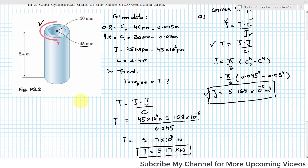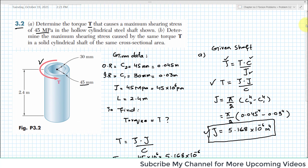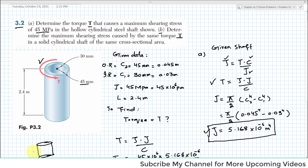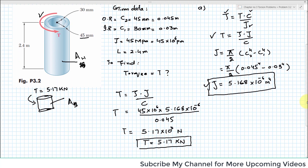This was the solution of part one. Now we will move toward part two of this problem. In part two, it is given: determine the maximum shear stress caused by the same torque T in a solid shaft of the same cross-sectional area. The shaft has been changed to a solid shaft, and the torque T is equal to 5.17 kN·m. You have to determine the maximum shear stress.